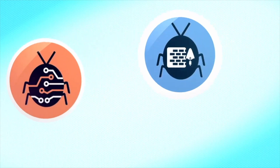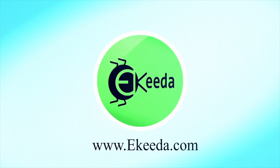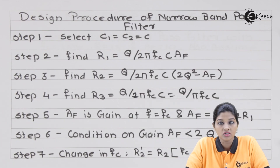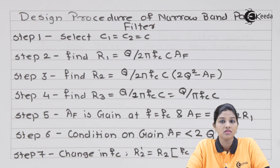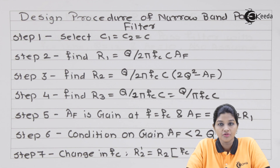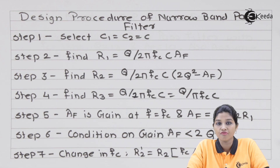A filter is basically a circuit which is used for frequency selection — we can say filters are frequency selective circuits. A filter allows a certain band of frequency and blocks the remaining band. In case of a filter, two bands are defined: pass band and stop band. Pass band is the band of frequency allowed by the filter, whereas stop band is the band of frequency that is attenuated or completely blocked by the filter.